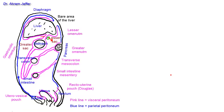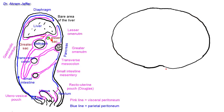Now let me follow the peritoneum in a horizontal section almost at the level of T12 vertebra. I will arrange the viscera so that the section looks similar to an axial CT or MRI section, which you will be more familiar with — in other words, drawn as if you are looking at the section of the body from below.